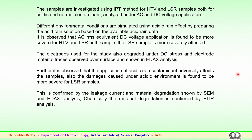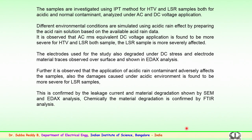Electrode material traces were observed left over on the surface, as confirmed by energy dispersive X-ray (EDAX) analysis. It was also observed that the application of acid rain contaminant adversely affects the samples, and the damage under acidic environment is found to be much more severe for the liquid silicon rubber samples. This is confirmed by the leakage current measured continuously during experimentation, and by surface analysis using SAM and EDAX. Chemically, the material degradation is confirmed by Fourier transform infrared (FTIR) analysis.